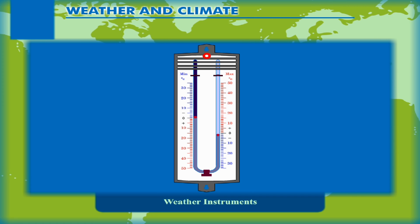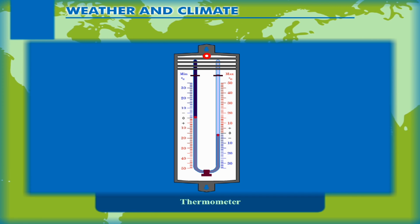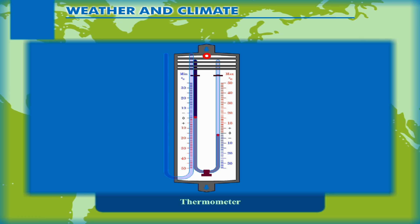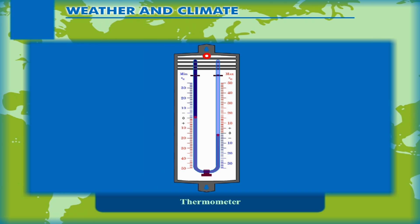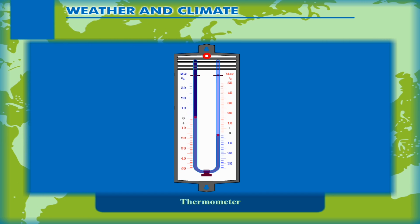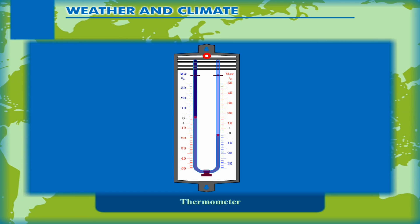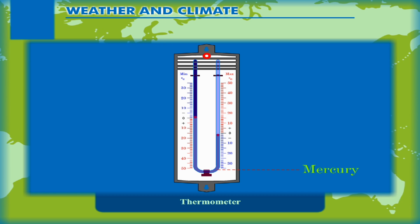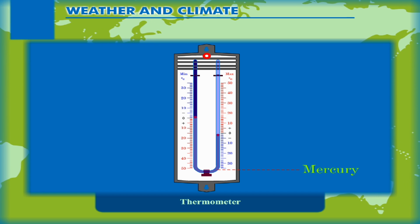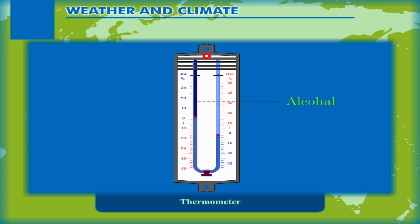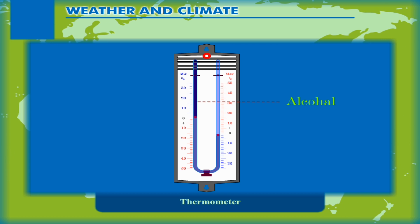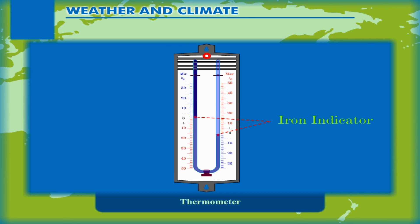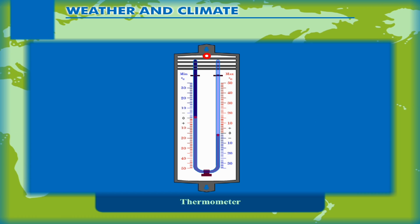Weather Instruments — Thermometer. The two limbs of the U-shaped Six's maximum and minimum thermometer are made up of glass. Mercury is filled in the lower parts of the U-shaped tube and alcohol in its two limbs. Two iron indicators in both limbs are used to read the temperatures.